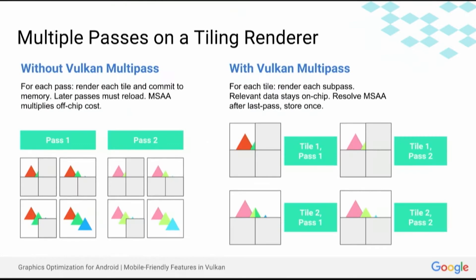This has been particularly painful for mobile devices because of that bandwidth and memory pressure. There's also volumetric effects where you may want to accumulate things like participating media across multiple passes. What this looks like on a tiling renderer without the Vulkan multi-pass mechanism is that for each pass, you have to render each tile and commit the results to the frame buffer. Then later passes must reload that data, loading back from that expensive off-chip memory. Multi-sampling, MSAA, multiplies this off-chip cost because rather than a single pixel, you're having to commit multiple samples to off-chip memory. This adds up incredibly quickly.